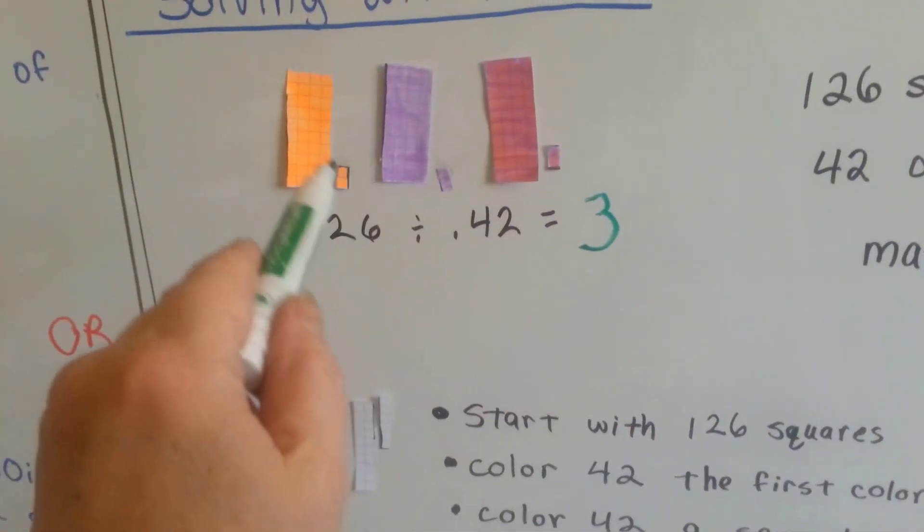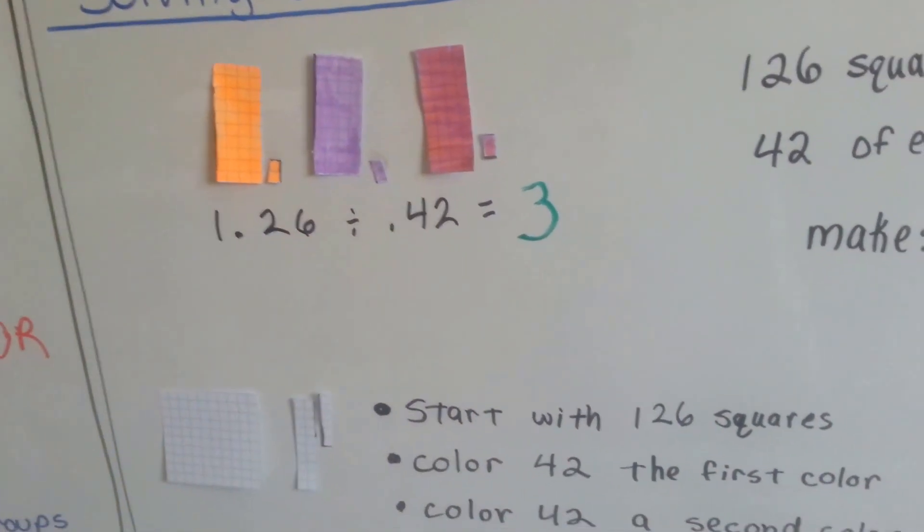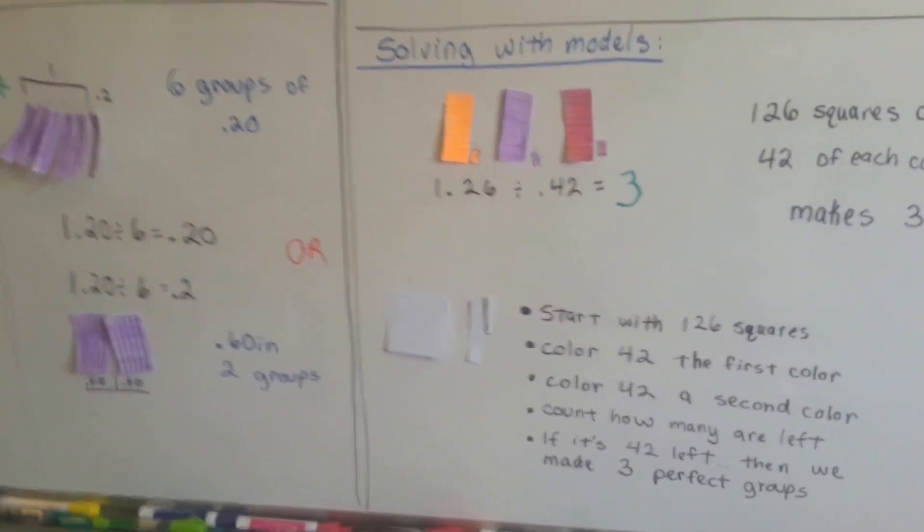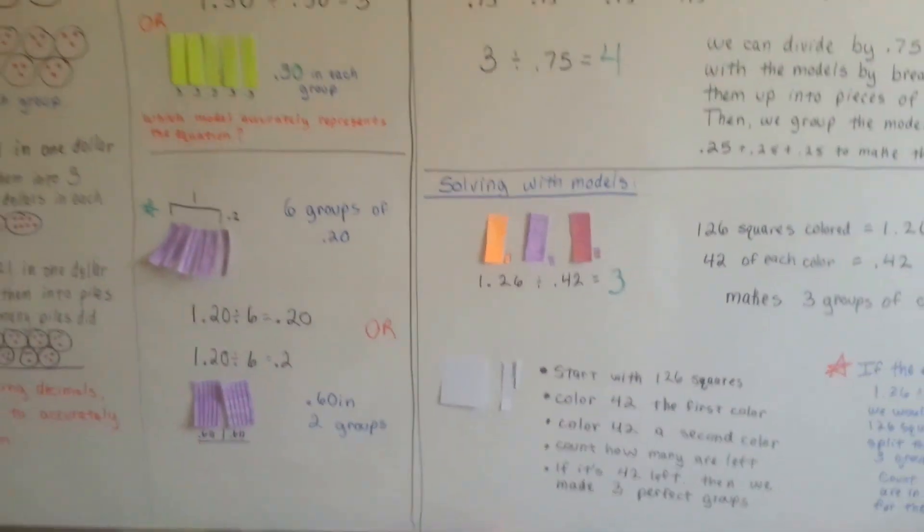We would split them immediately into three groups. For this one, we would have to color 42 squares and then find out how many groups it gave us. See? Big difference. So it's very important to know what the divisor is talking about.